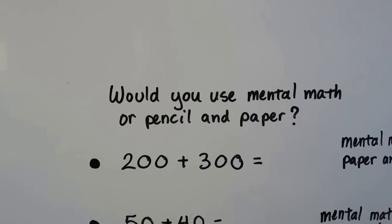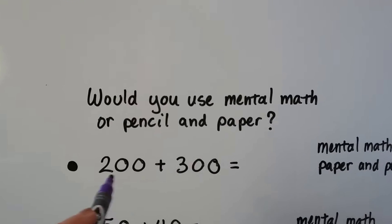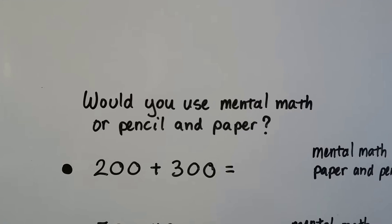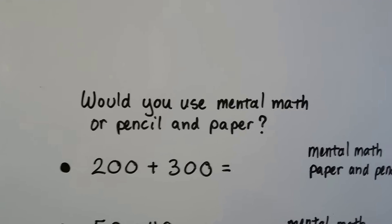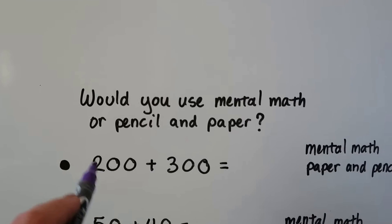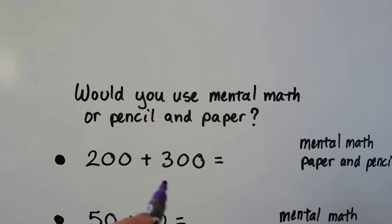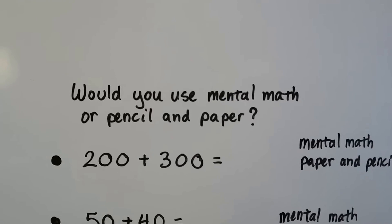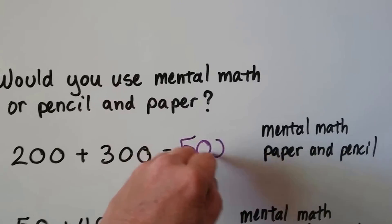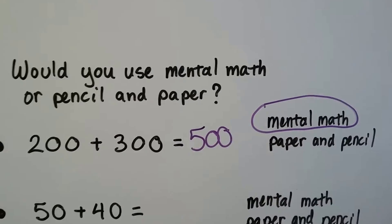Would you use mental math or pencil and paper to add this one? This is just adding hundreds - 200 and 300 is like two plus three with a couple of zeros, so that'd be 500. We could do that in our head - that would be mental math, and it wouldn't be hard.